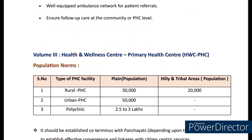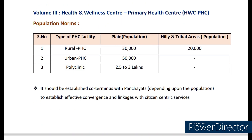Now coming to Volume 3, that is Health and Wellness Centre, Primary Health Care Centre — HWC, PHC. Coming to population norms, there are three types of PHC facilities: Rural PHC, Urban PHC and Polyclinic. The population for Rural PHC under plain areas is 30,000, under hilly and tribal areas it's 20,000. For Urban PHC it's 50,000. For Polyclinic the population is 2.5 to 3 lakhs. HWC PHC should be established co-terminus with panchayats to establish effective convergence and linkages with citizen-centric services.